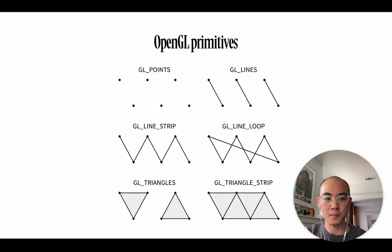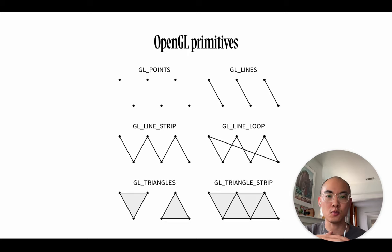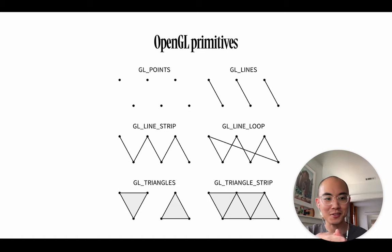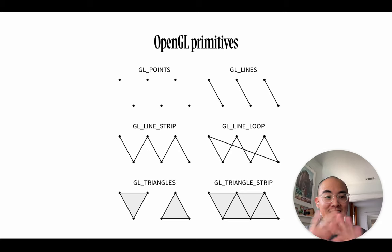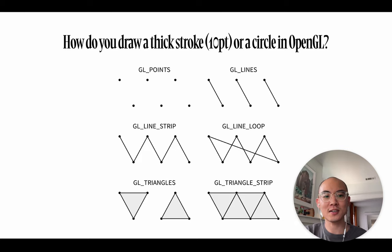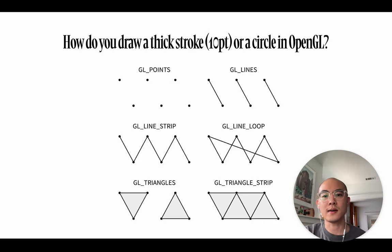We'll talk about something called OpenGL — Open Graphics Language — which is a pretty common standard for how you communicate with a graphics card to actually draw things to the screen. These are the actual primitives you get in OpenGL: you only get points, very thin lines, and triangles. That's it — no squares, no circles. How would you draw a circle, or how would you draw a thick stroke in OpenGL? I'll give you a few seconds to think about it.